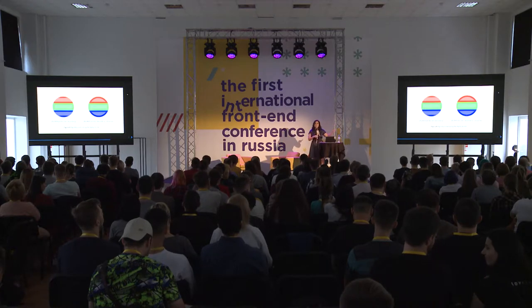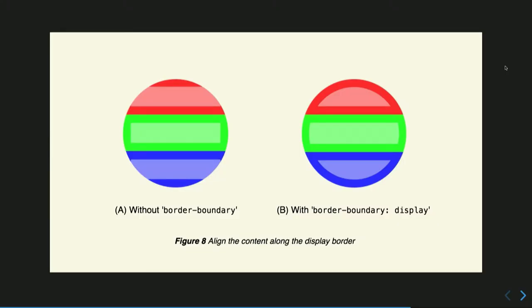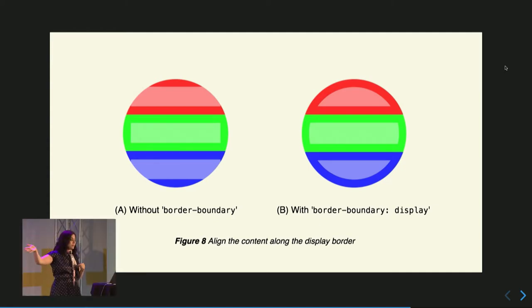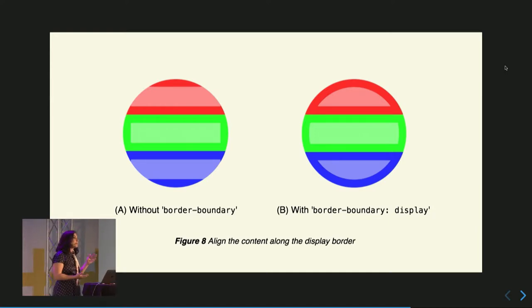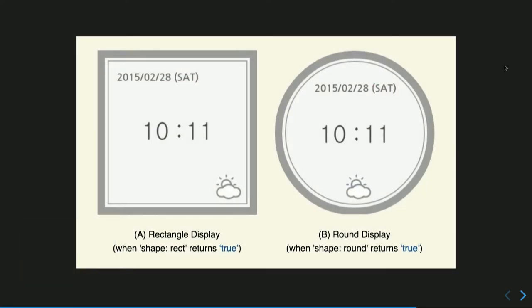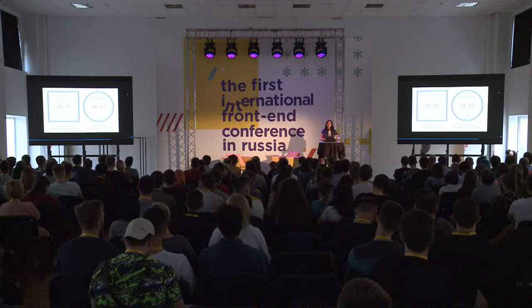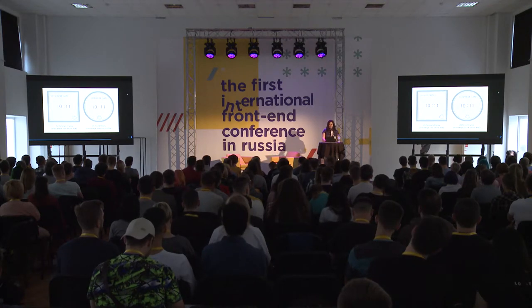Round display — currently an editor's draft — allows you to apply any CSS property based on the display itself. For example, border-boundary would always be a rectangle, but in the future we might set border-boundary to 'display' for a round display, letting any kind of browser recognize it. You could create different interfaces for your watch or any non-standard display and have a good user experience. People are now using JavaScript and CSS to code apps for watches and cars. It's a working draft, though.